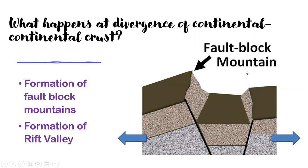What are fault block mountains? When the two plates diverge and move far away from each other, some blocks of the earth's crust rise and some blocks sink a little bit down, and some rise and tilt. The whole block of earth's crust that rises is called a fault block mountain. The area that goes down is normally called a rift valley.